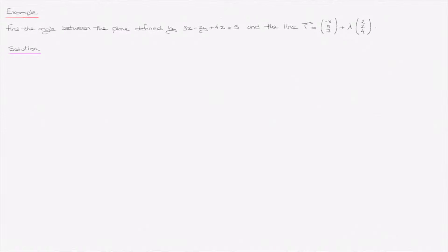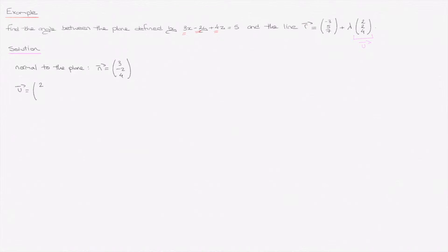To find the angle theta, the first thing we need is: one, the normal to the plane, and two, the direction vector of the line. Looking at the question, we have the direction vector of the line — it's (2, 2, 4), so I'll call that u. For the normal to the plane, we use the coefficients of the equation of the plane, giving us n equals (3, -2, 4).